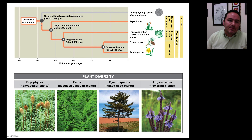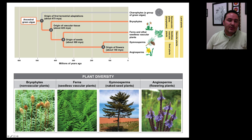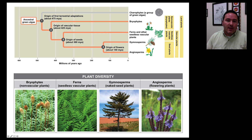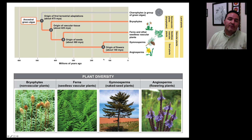Looking at plant diversity: after their original evolution, the next step was the origin of vascular tissues. You went from things like the bryophytes — mosses and so forth — to things like ferns that now have woody parts but do not produce seeds yet. Then seeds evolved around 350–360 million years ago, giving rise to naked-seeded plants like the gymnosperms — pine trees and evergreens. It wasn't until about 140 million years ago that flowering plants evolved.